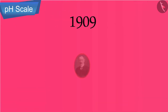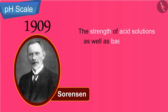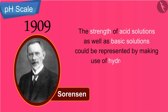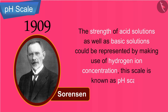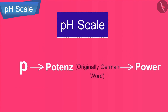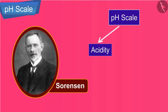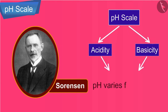In 1909, Sorensen devised a scale on which the strength of acid and basic solutions could be represented using hydrogen ion concentration. This scale is known as the pH scale — pH stands for potence, originally a German word for power, or in simple words, the power of hydrogen ions. Sorensen linked hydrogen ion concentrations to simple numbers from 0 to 14 on his pH scale.